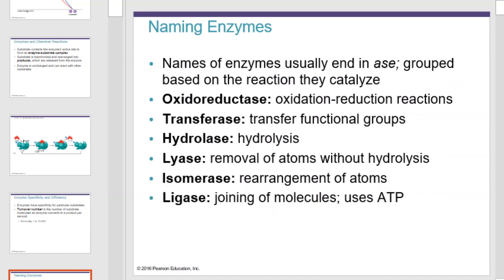Names of enzymes usually end in -ase. They are grouped based on the reaction they catalyze. Oxidoreductase is an oxidation-reduction reaction enzyme. Transferase is an enzyme that transfers functional groups. Hydrolase is a hydrolysis enzyme. Lyase removes atoms without hydrolysis. Isomerase rearranges atoms. And ligase joins molecules and uses ATP.